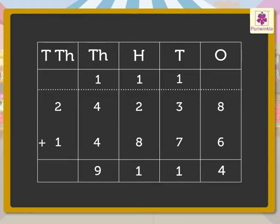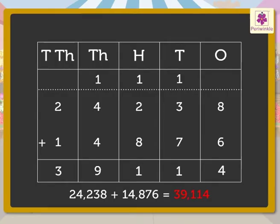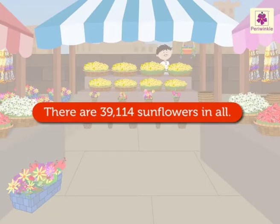Finally, we add the numbers in the ten-thousands column: two and one, and we get three, which we write in the ten-thousands column. Hence, we get the number thirty-nine thousand one hundred fourteen. We say the sum of twenty-four thousand two hundred thirty-eight and fourteen thousand eight hundred seventy-six is thirty-nine thousand one hundred fourteen. Thus, there are thirty-nine thousand one hundred fourteen sunflowers in all.